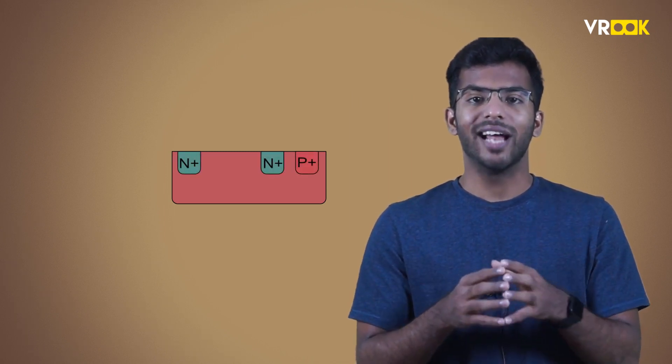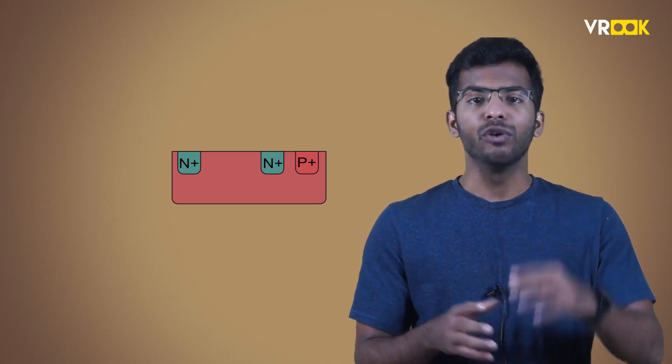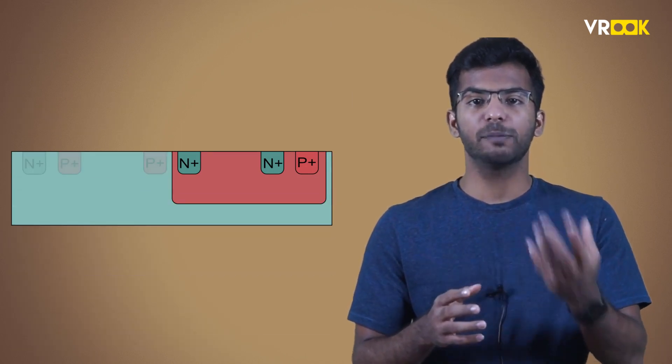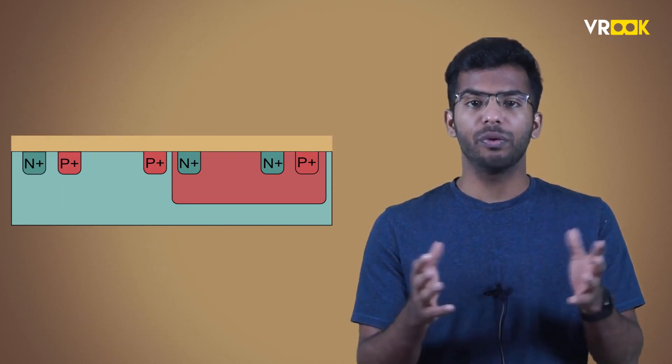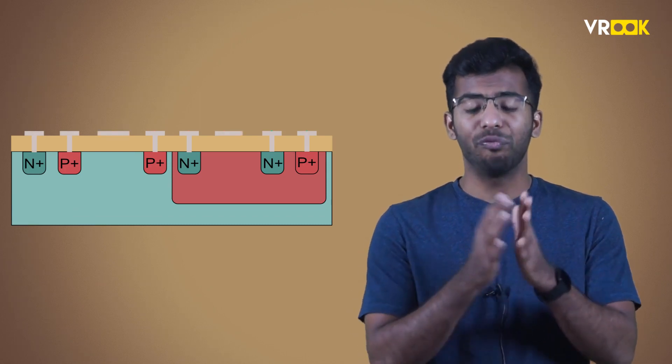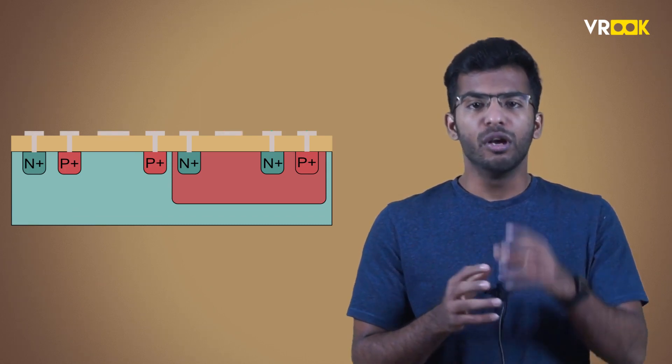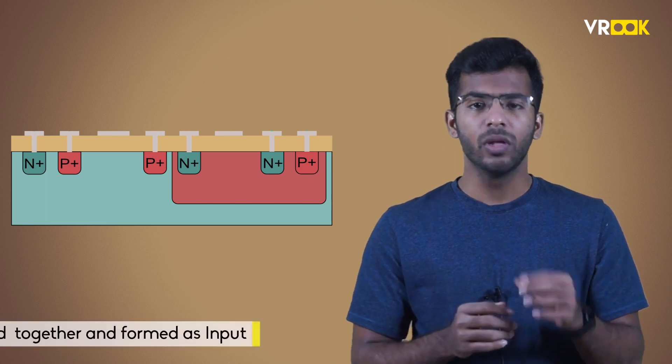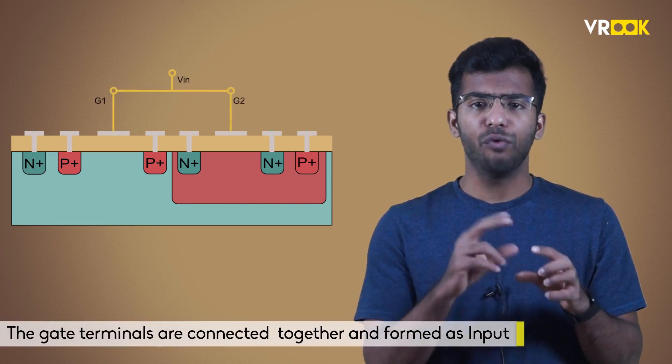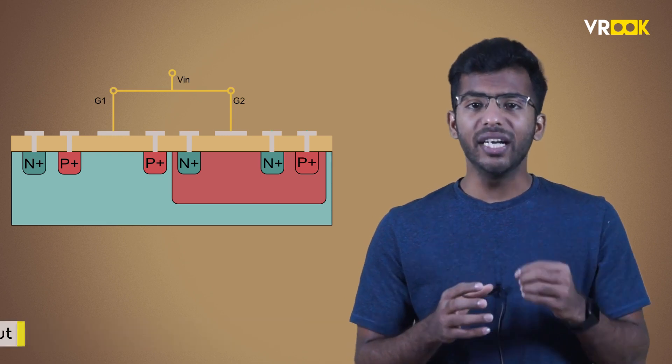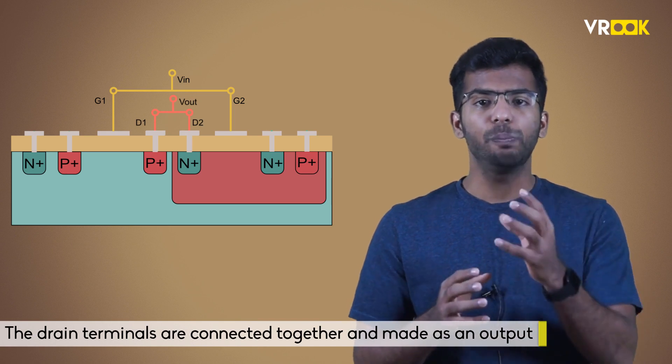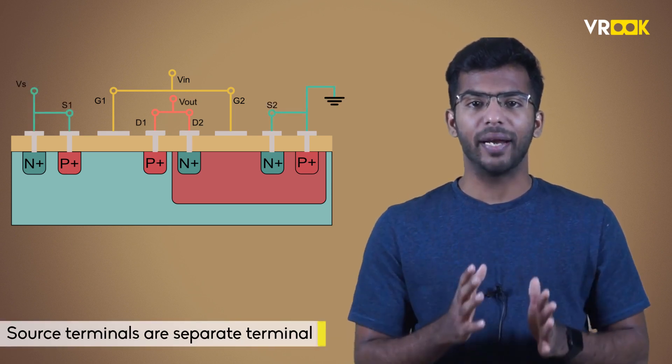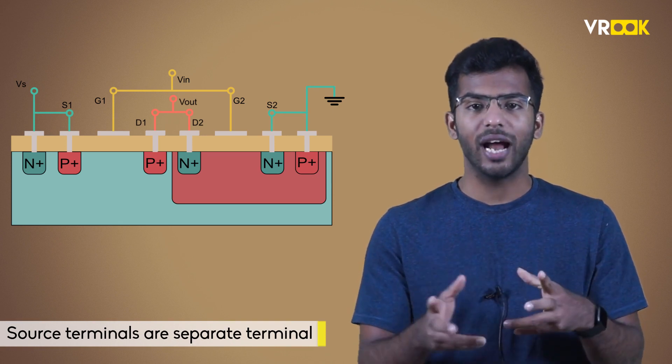At one end we have NMOS where we have two N plus pockets and P substrate. At the other end we have PMOS which has two P plus pockets and N-type base substrate. The usual metallic contacts are taken out from the drain, source and gate terminals of both the MOSFETs. Both the MOSFETs are connected in series. The gate terminals are connected together and form the input terminal. The drain terminals of both MOSFETs are connected together and made as an output terminal. Source terminals are separate and receive supply voltage across source and gate.